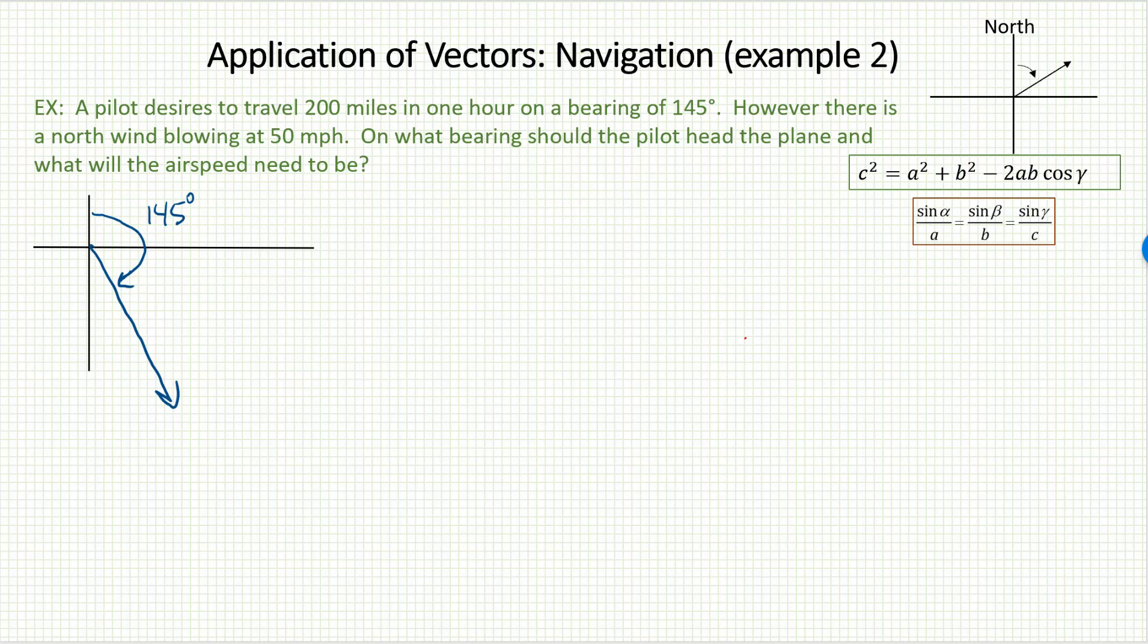The length of this vector should be 200. If I want to travel 200 miles in one hour, that is a final speed of 200 miles an hour. But here's the thing.